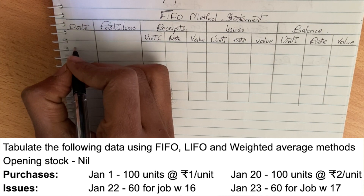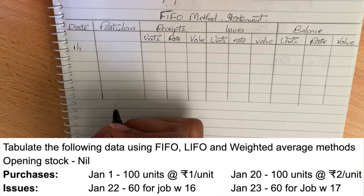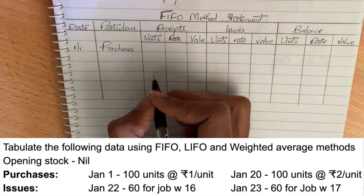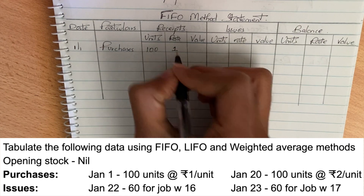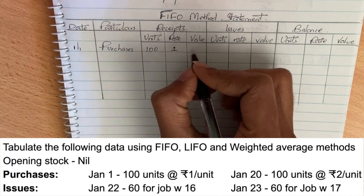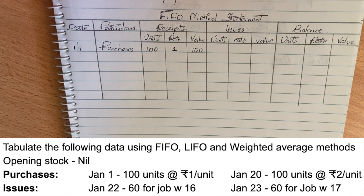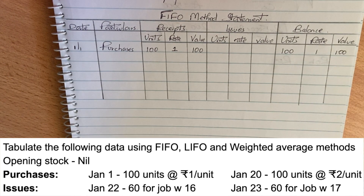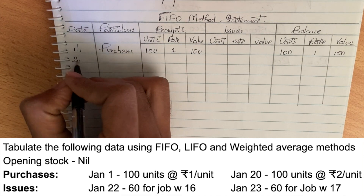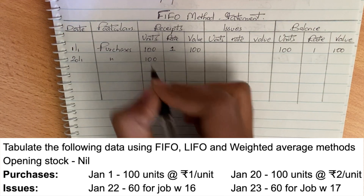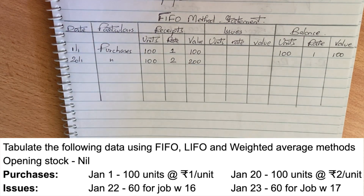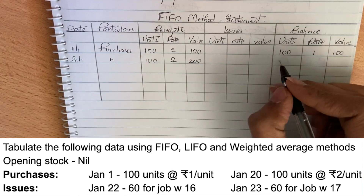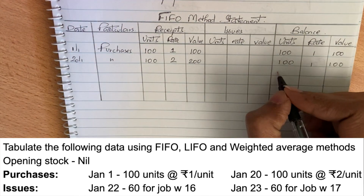First, in January, we need to make a purchase. The units are 100 units at the rate of 1 per unit, so the total value is 100 into 1 = 100. That is the first purchase. There is no issue yet, so the balance is 100 units at 1, totaling 100. Next, on January 20th, we purchase 100 units at 2 per unit, so the value is 200. There is no issue, so the balance is 100 units at 1 and 100 units at 2.